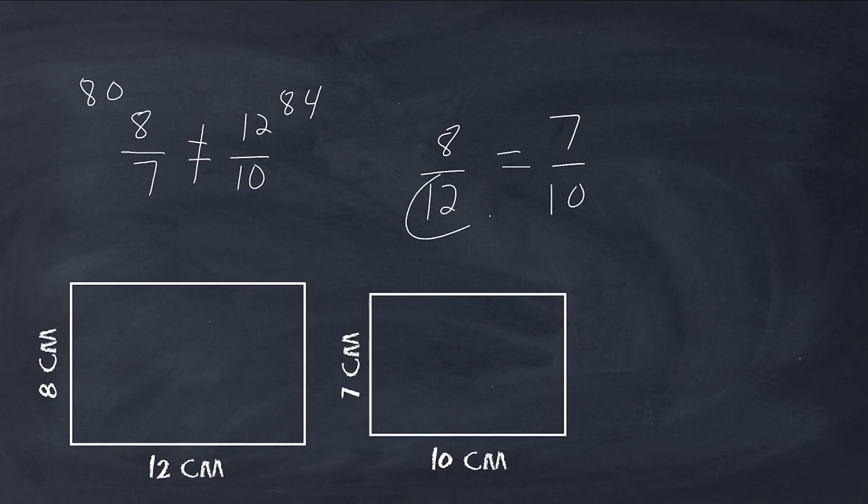And if we cross multiply, you can see that these objects are not similar to each other because we have 80 over here and we have 84 over there. So we would say that these shapes are not similar to each other. So that is how you can quickly determine whether or not a pair of shapes are similar to each other or not.